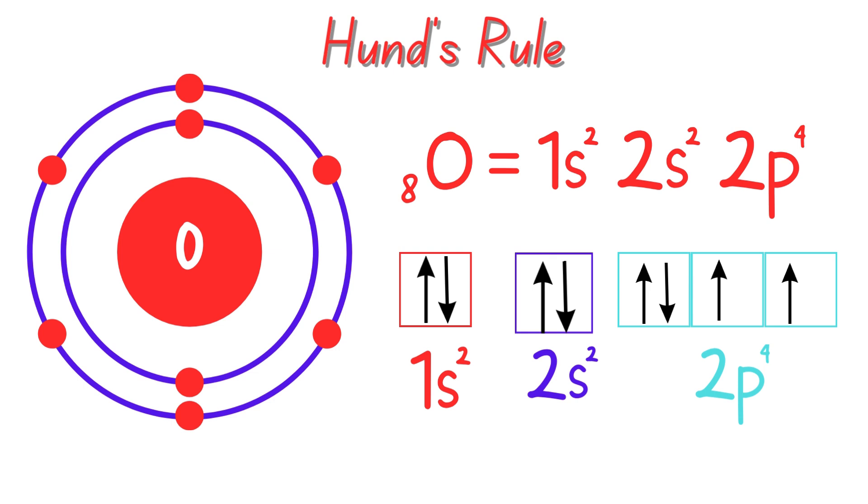Think of it like passengers on a bus. If there are three empty seats in a row, no one wants to sit next to someone else unless they have to. Electrons behave in a similar way.